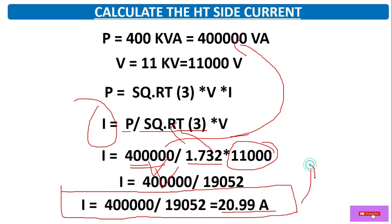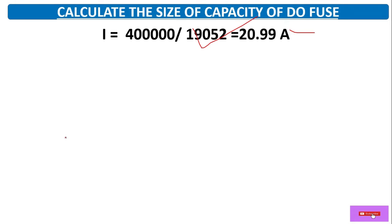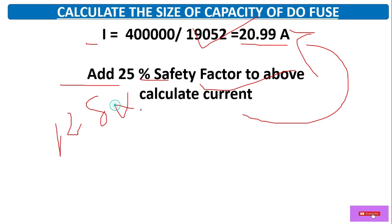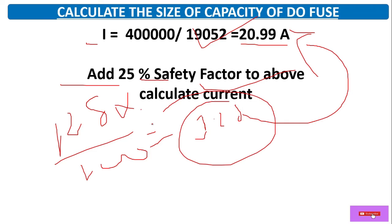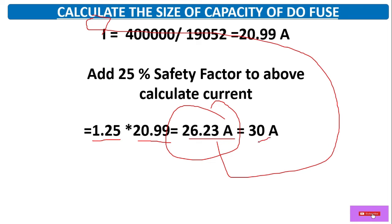This is the calculated load current as per the 400 KVA transformer — 20.99 amperes. To calculate the size of the DO fuse we need to consider a safety factor as well. We add 25% to the calculated current, meaning we multiply by 1.25. So 1.25 × 20.99 = 26.23 amperes. This is the calculated DO fuse capacity.